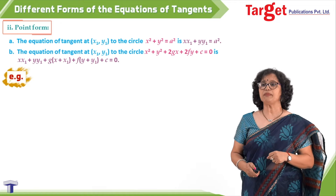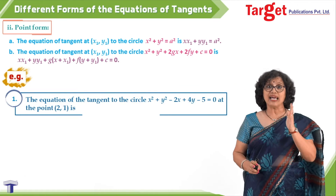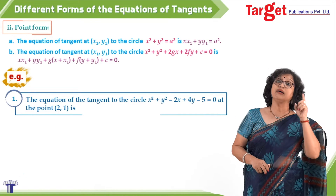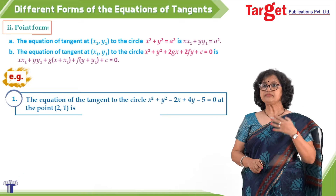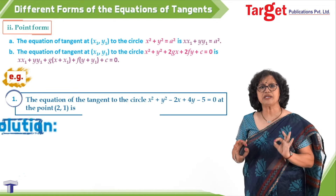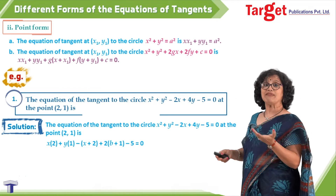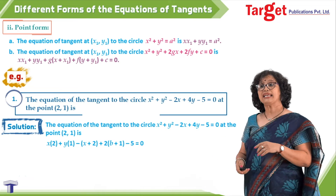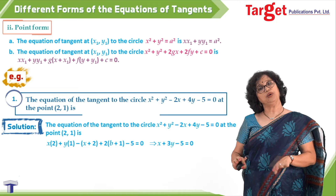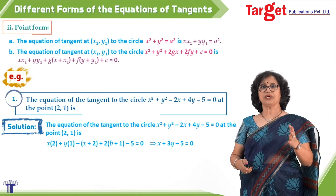Example: find the equation of the tangent to the circle x² + y² − 2x + 4y − 5 = 0 at the point (2, 1). The point is given, the circle is given — just substitute into the formula with x₁ = 2 and y₁ = 1. The final answer is x + 3y − 5 = 0. No other working is required beyond substitution into the formula.